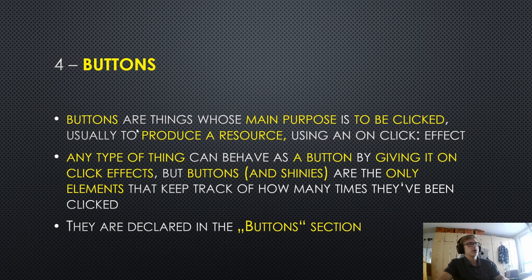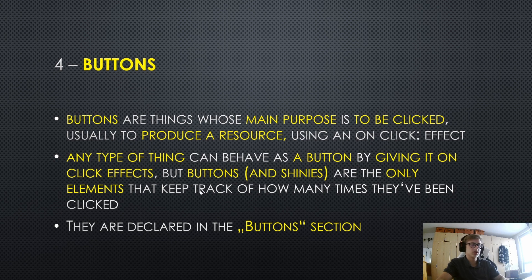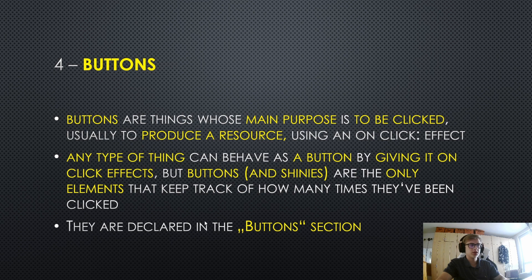Buttons are things whose main purpose is to be clicked, usually to produce a resource using an on-click effect. Any type of thing can behave as a button by giving it on-click effects, but buttons — and shinies for that matter — are the only elements that keep track of how many times they've been clicked. They are of course declared in the buttons section with a thingy.